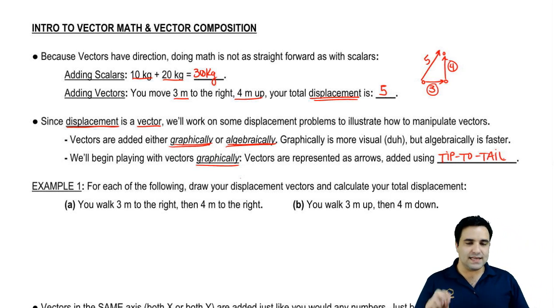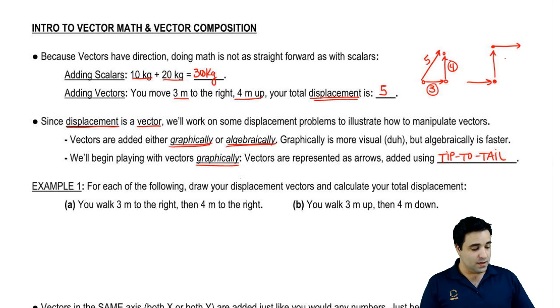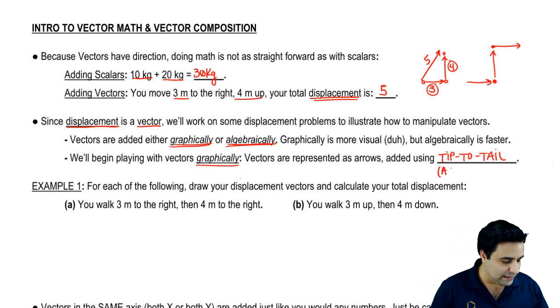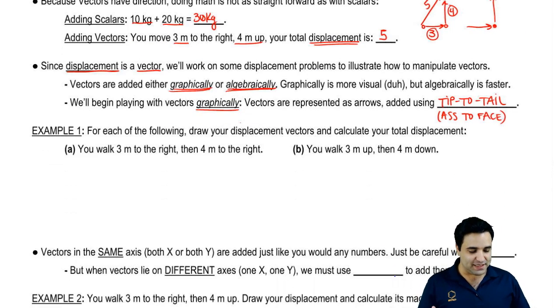We're going to add these arrows using a method called tip to tail. The idea is that the tip of one vector will go in the tail of the other. So if I'm adding these, the tip of the first guy goes on the tail of the second guy. You can kind of keep doing this tip to tail. There's a professor that instead of calling it tip to tail, he calls it ass to face. So I thought that was kind of funny. The ass of the vector on the face of the vector. Maybe you'll remember it that way.